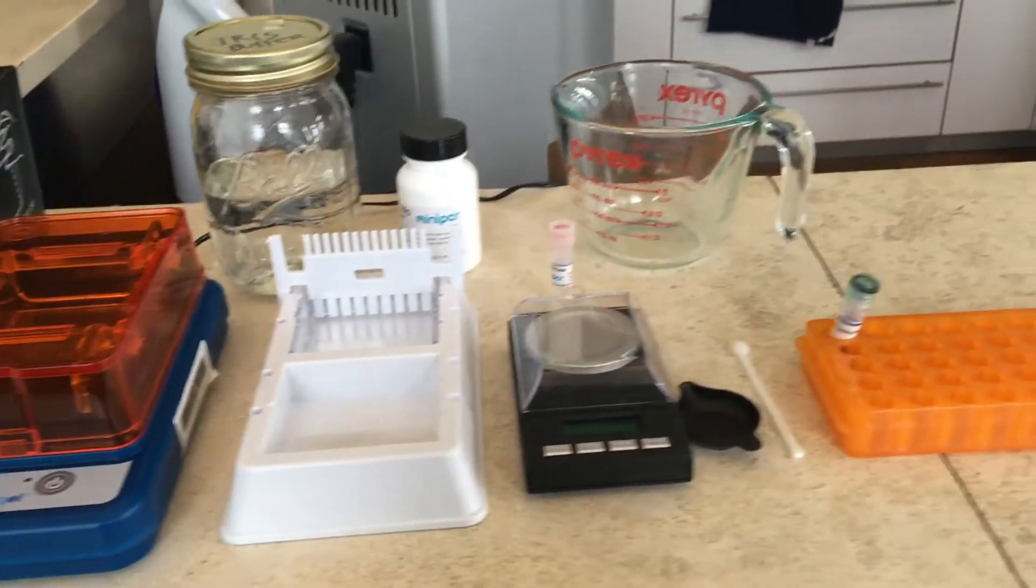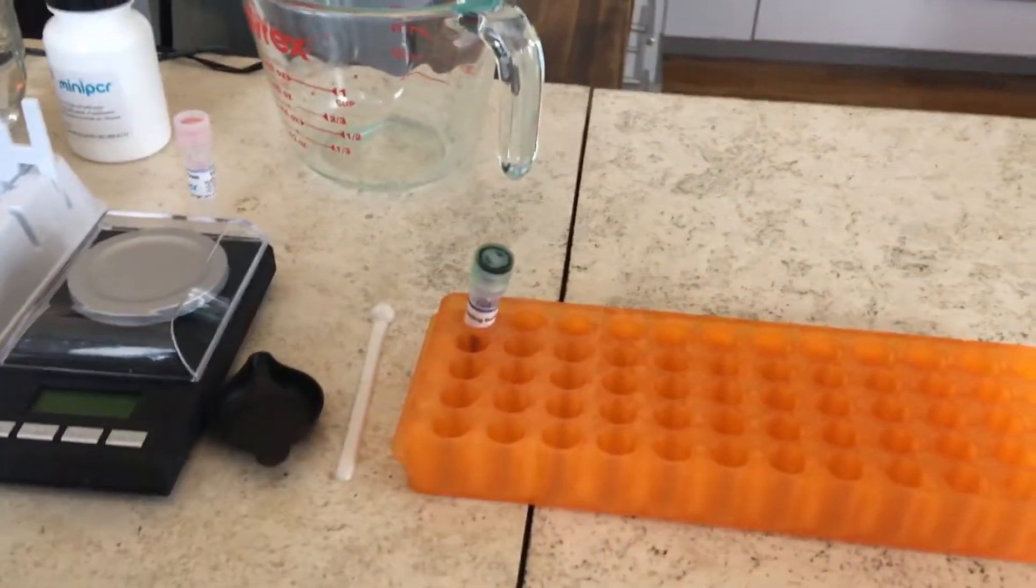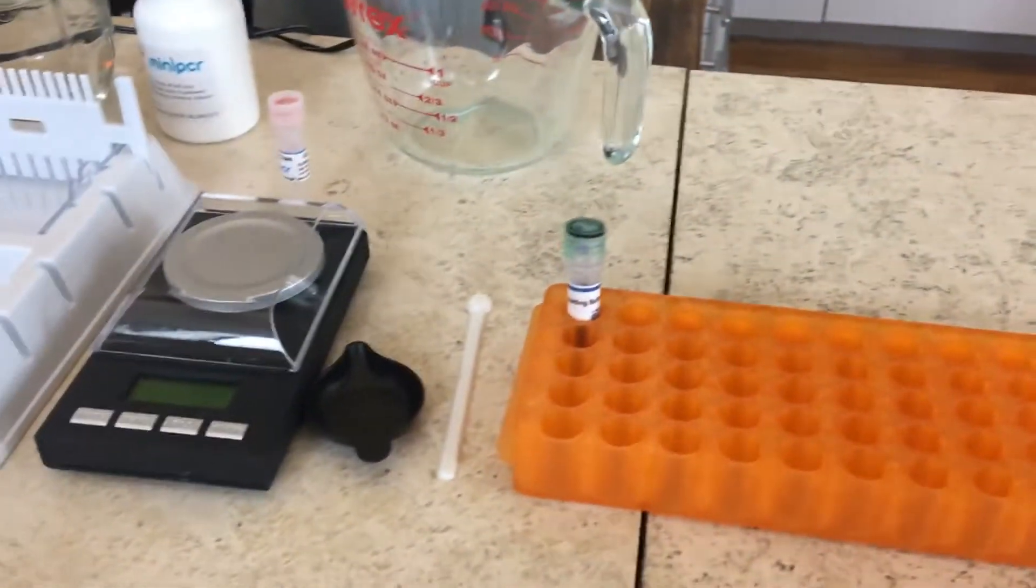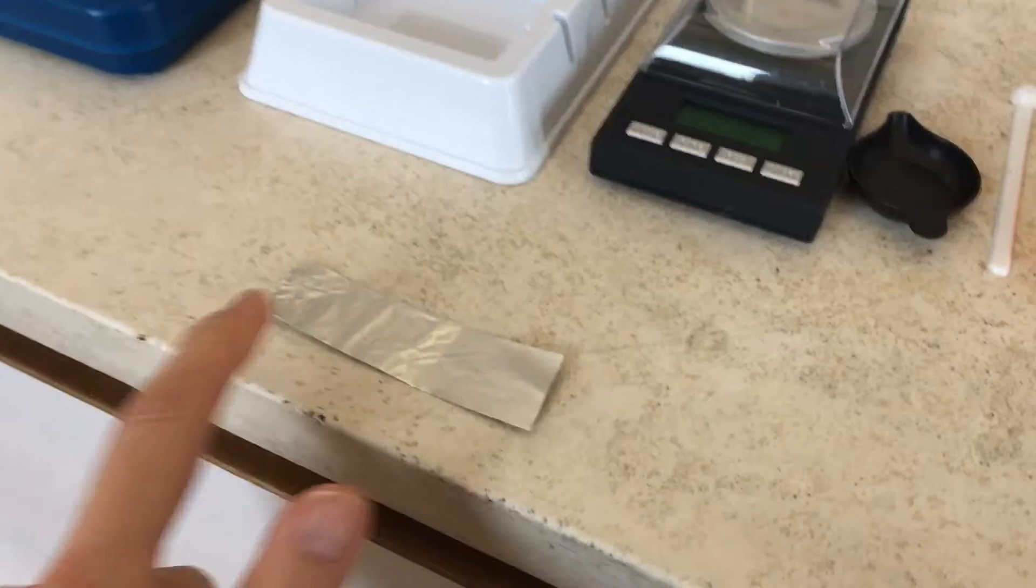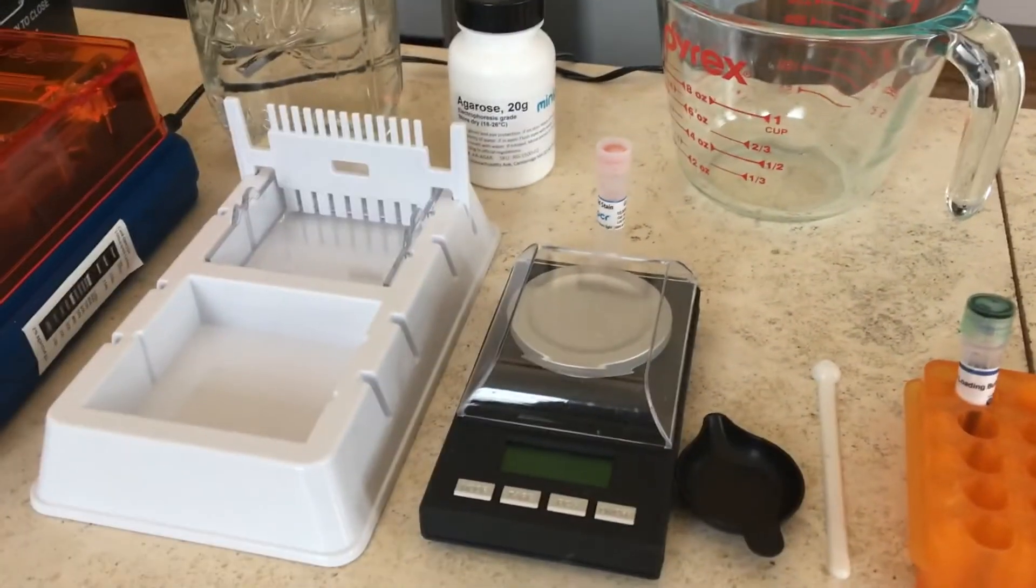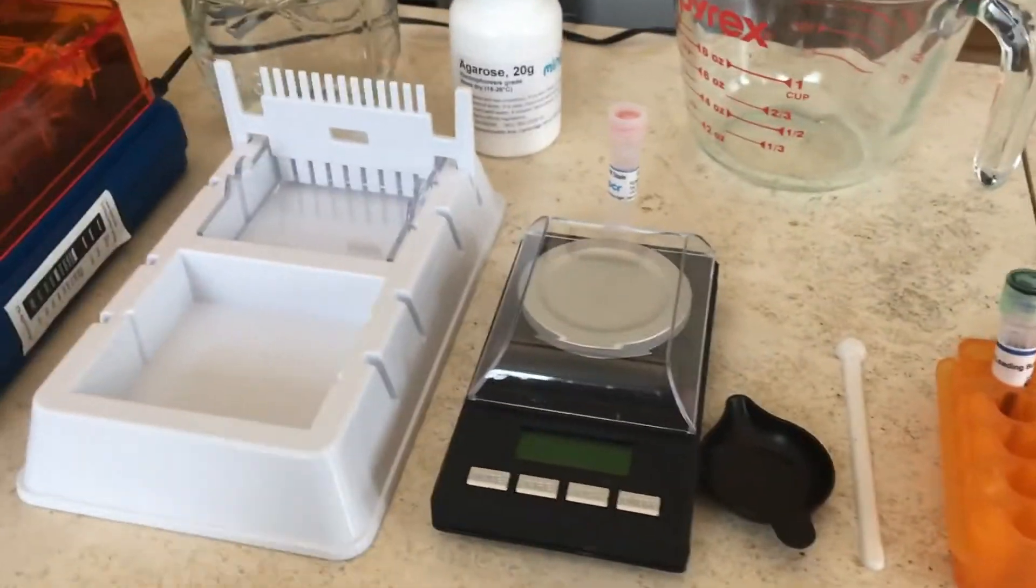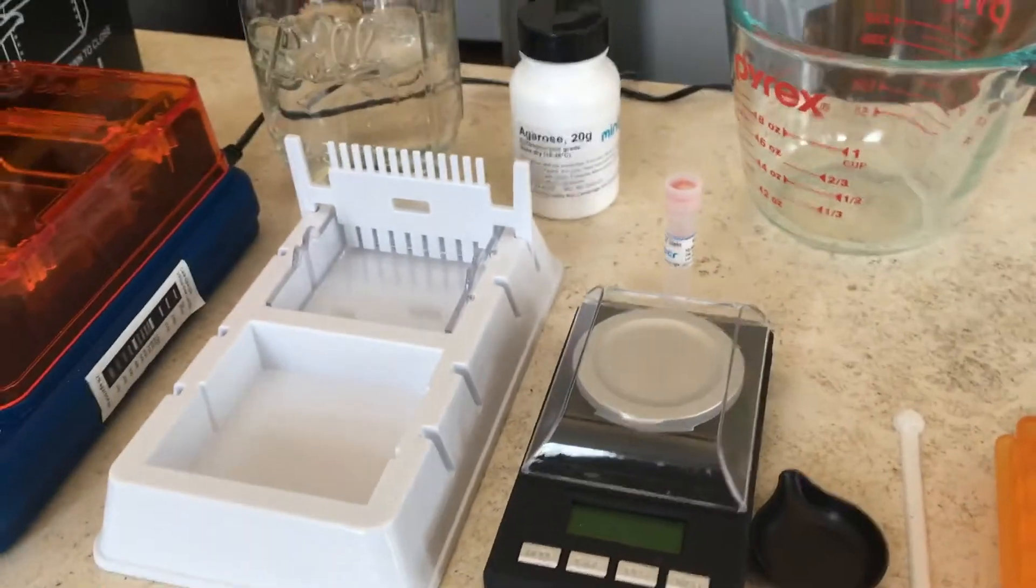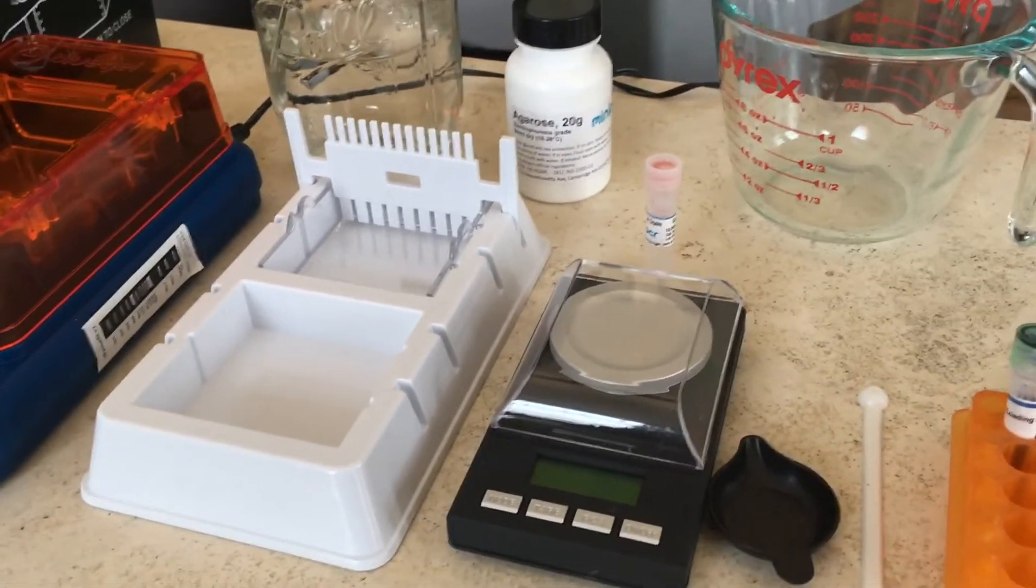So this is the setup, all the things we're going to need. We're going to need some loading buffer. We're going to put that on a little bit of foil here. We're going to weigh out some agarose, 20 milligrams. That's why we need a special scale because a regular scale isn't able to measure it out exactly enough.